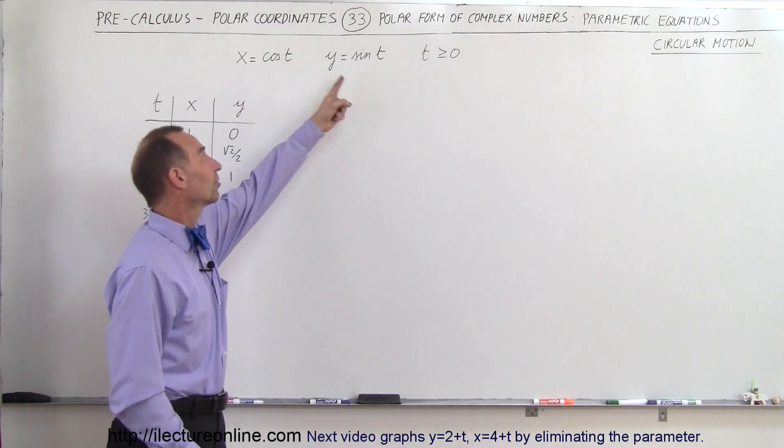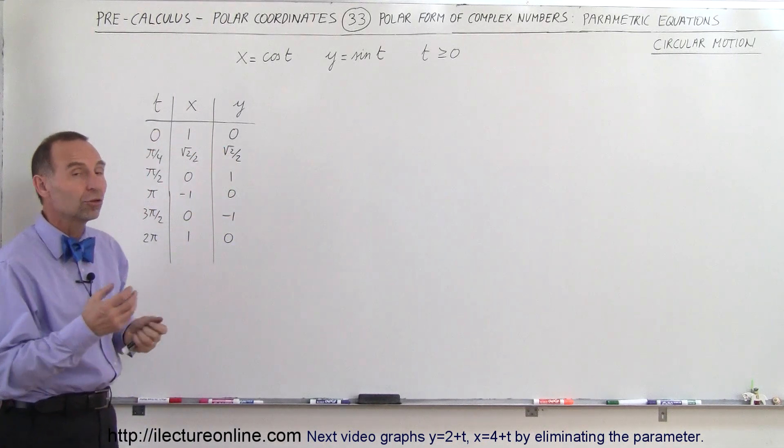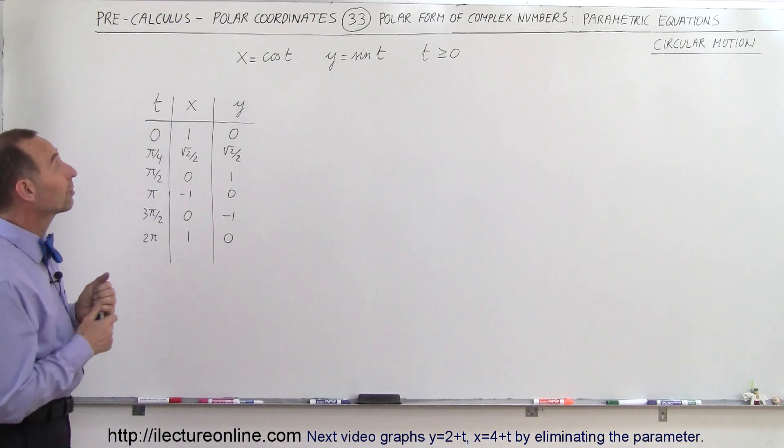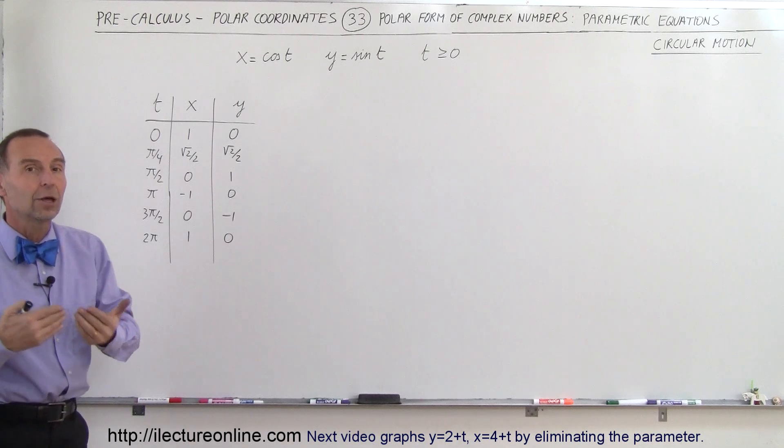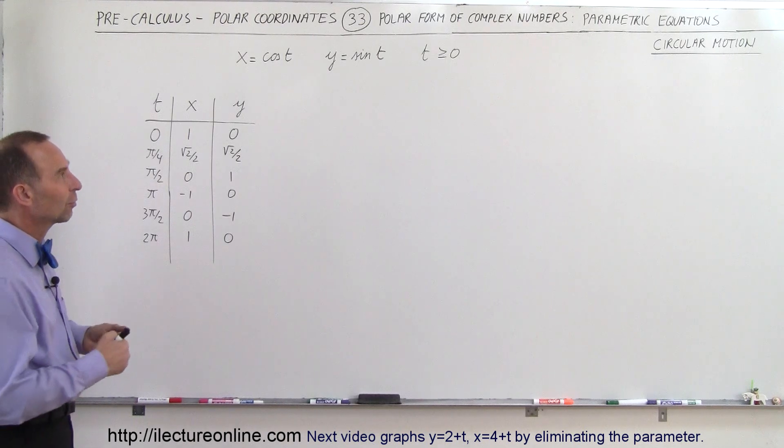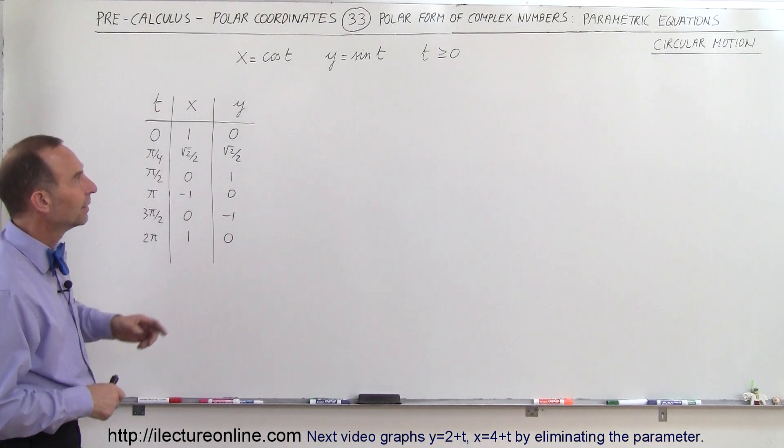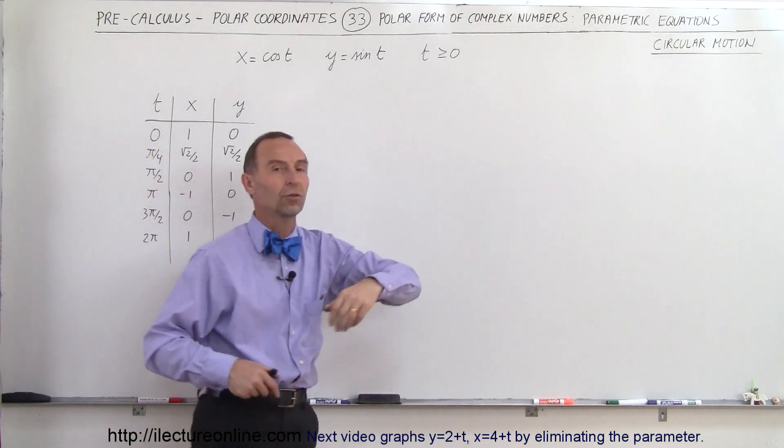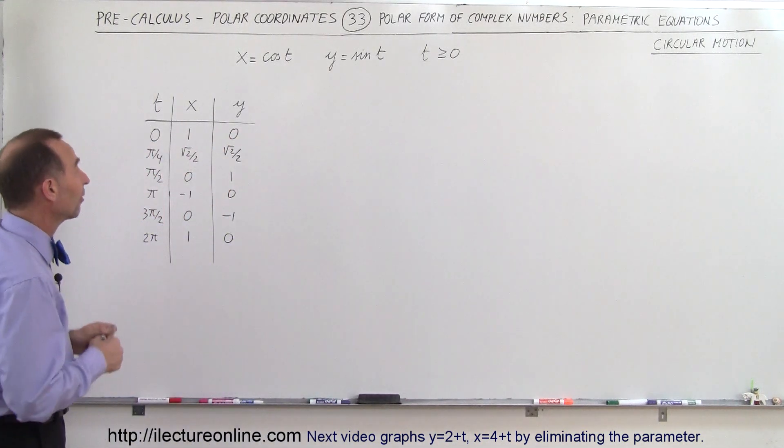x and y are now going to be functions of t. They're going to be trigonometric functions both depending upon a third parameter t. That's why we call them parametric equations. t needs to be greater than or equal to 0, so that again time t could be representative of time.